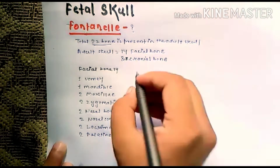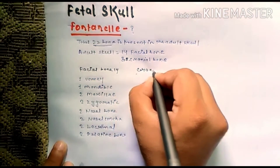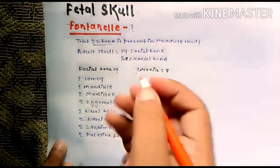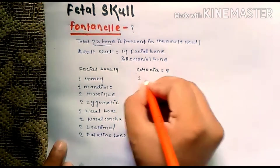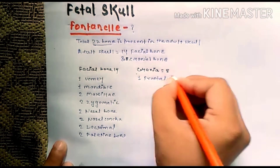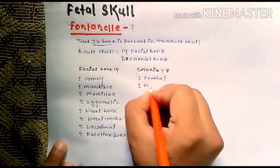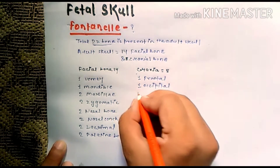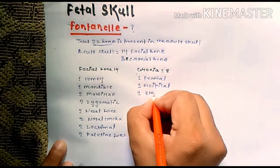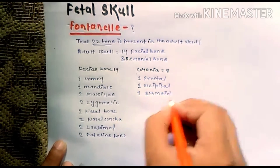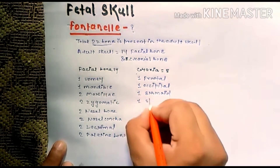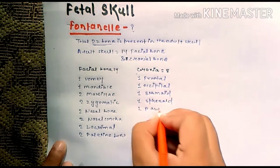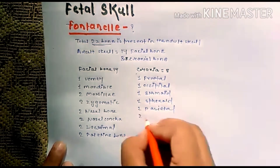Now we know the cranial bones — total eight: one frontal, one occipital, one ethmoid, one sphenoid, two parietal, and two temporal bones. So this is the adult skull.